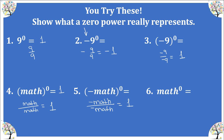In this next example, there are no parentheses. We have the variables m, a, t, and h, but notice that h is the only factor raised to the power of 0. So m, a, and t are each raised to the power of 1. We have m, a, t, and then h over h which gives us 1, so we have m, a, t times 1, which is just m, a, t. The point here is that every factor has its own exponent, and this 0 is only attached to h.